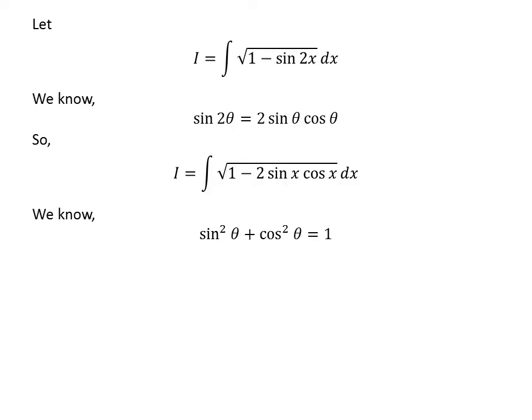We also know the famous identity: for any angle theta, square of sine of theta plus square of cosine of theta is equal to 1. Instead of theta, we will have x. So, I have replaced 1 in the above integrand by square of sine of x plus square of cosine of x.